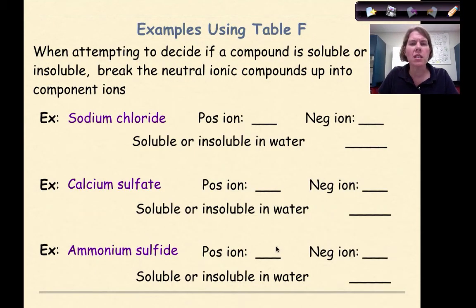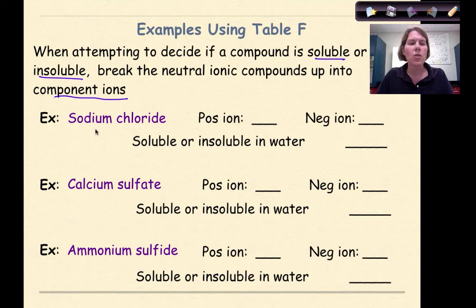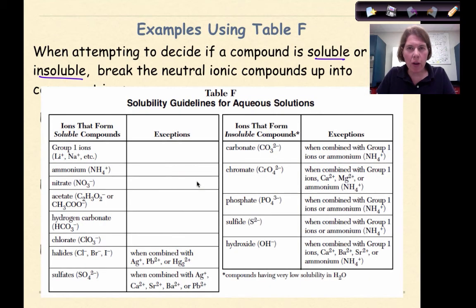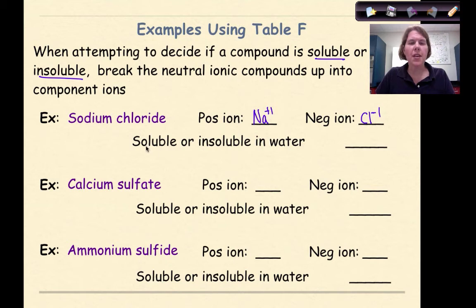Let's round up this review with examples using Table F. When deciding if a compound is soluble or insoluble, break the neutral ionic compound into its component ions. First, sodium chloride: the positive ion is Na+ and the negative ion is Cl−. Going to Table F, Na is a Group 1 metal, which means sodium chloride is soluble.